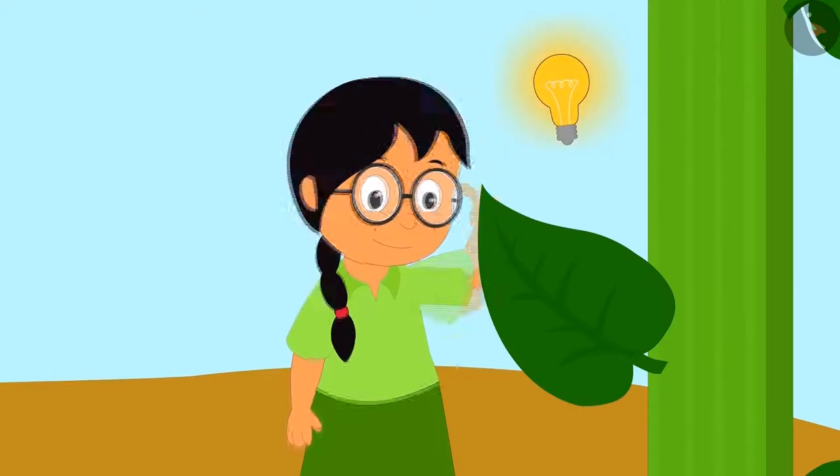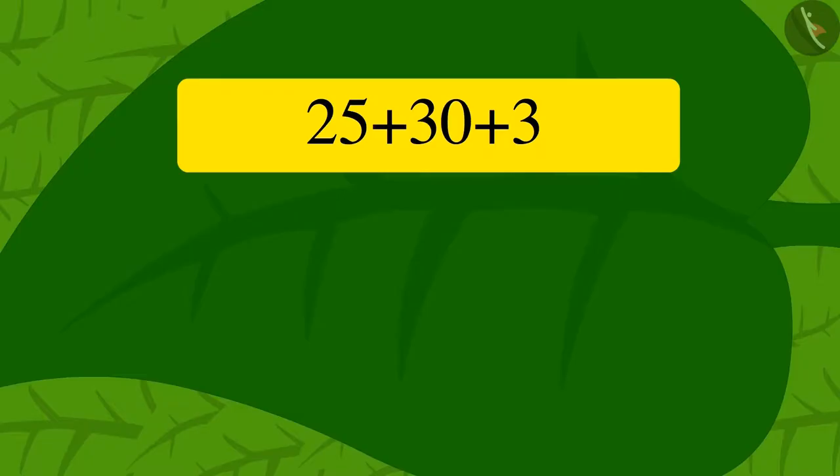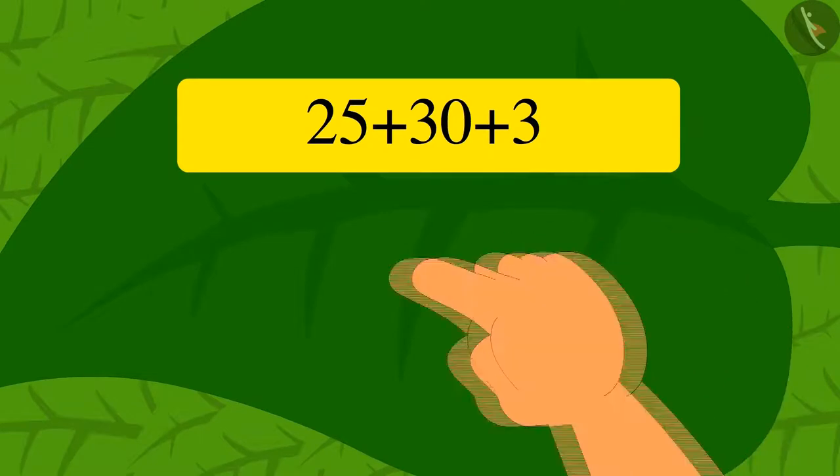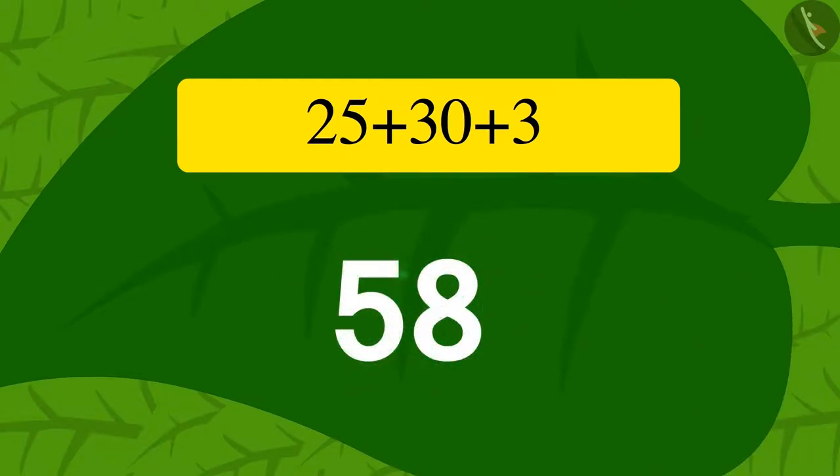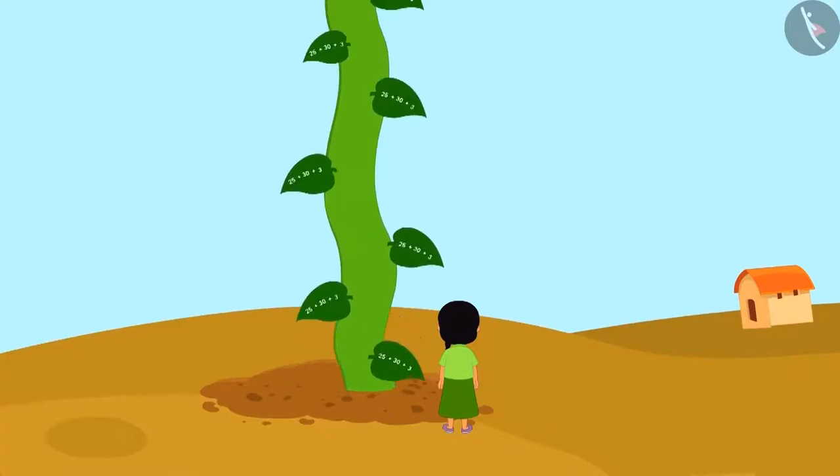Like what we did, Meenu solved this riddle in her mind and wrote the answer 58 with her finger on the vine leaf. As soon as she wrote the answer to the puzzle, the vine became shorter as it sunk into the ground.